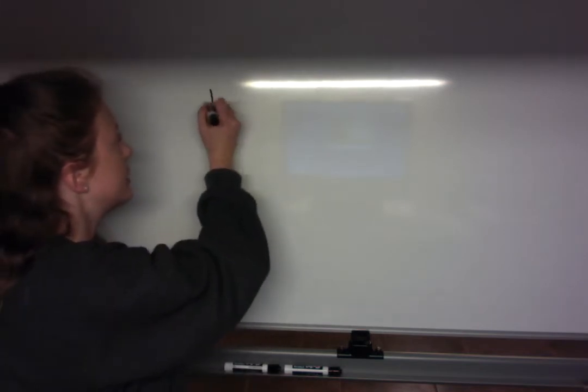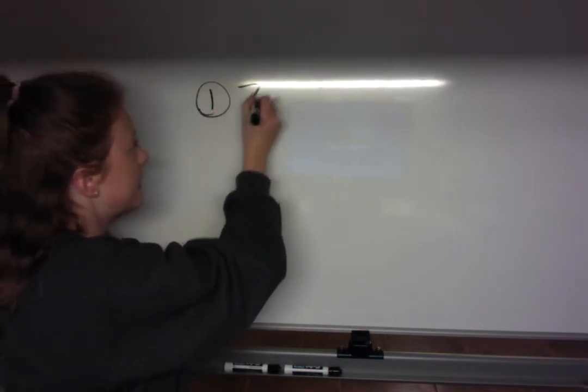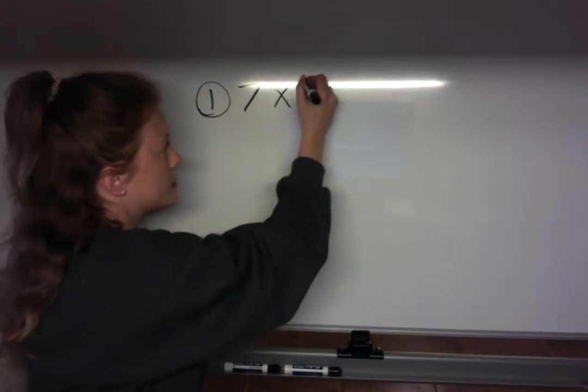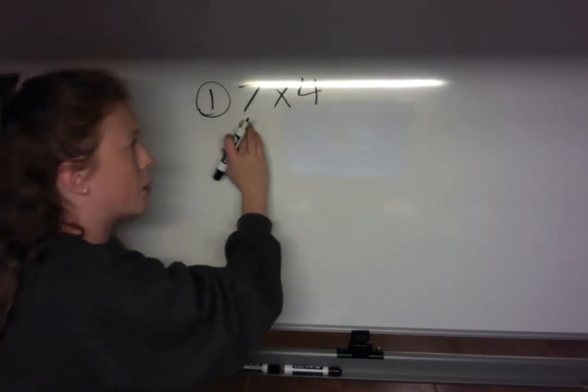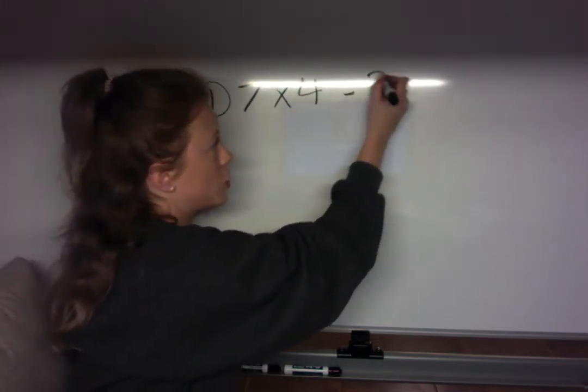The first thing we need to do is figure out the total hours worked. We worked 7 hours for 4 days, so we multiply 7 hours times 4 days, and we get 28 hours.